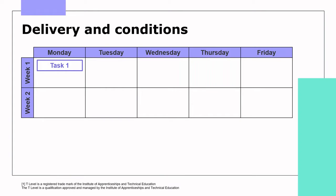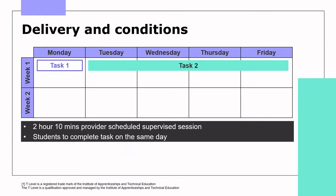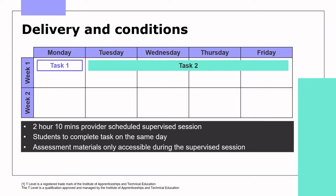Task 1 would be completed by students before moving on to task 2, which is scheduled by you, the provider, during the rest of week 1. The task lasts 2 hours and 10 minutes, conducted during a supervised session. If students have any access arrangements or reasonable adjustments, such as additional time, you should apply that internally and increase the task time accordingly. It's important to note that all students must complete the assessment on the same day, with assessment materials only being available during the supervised session, so ensure you have secure storage areas for student evidence.